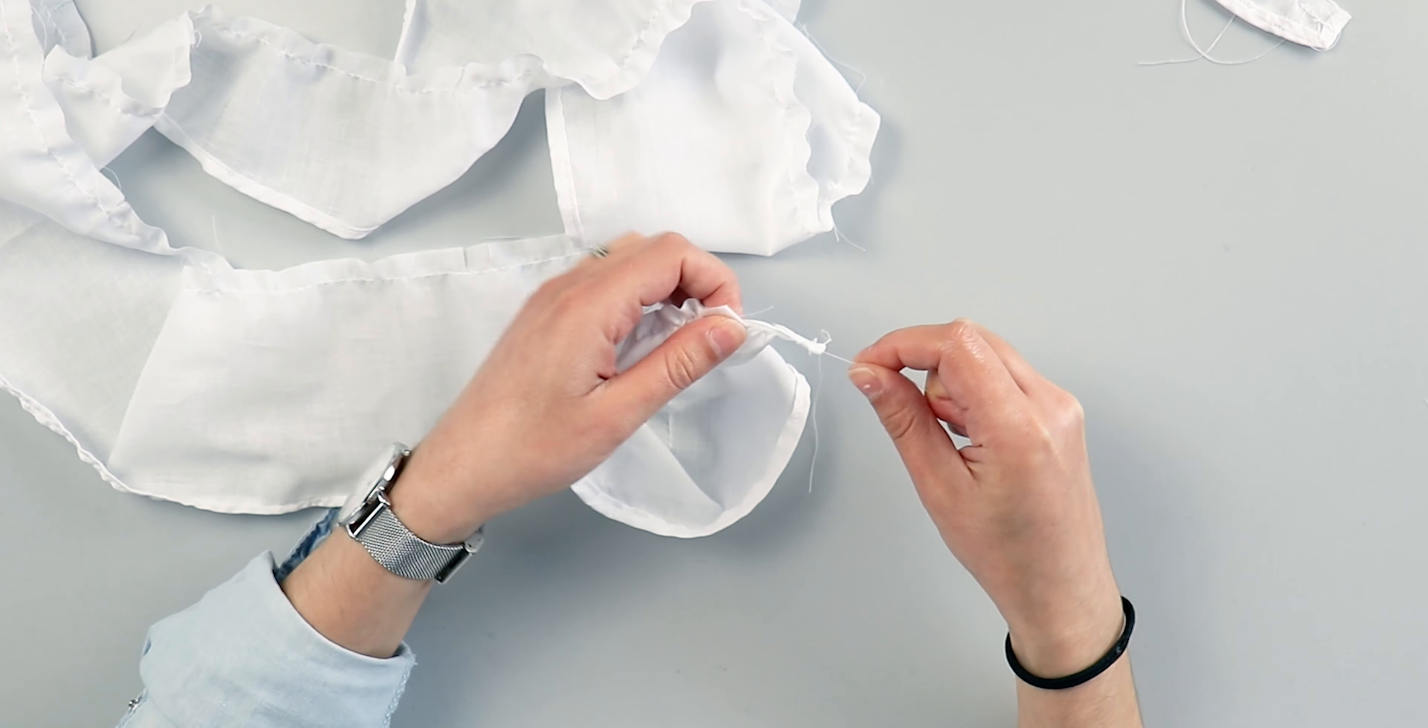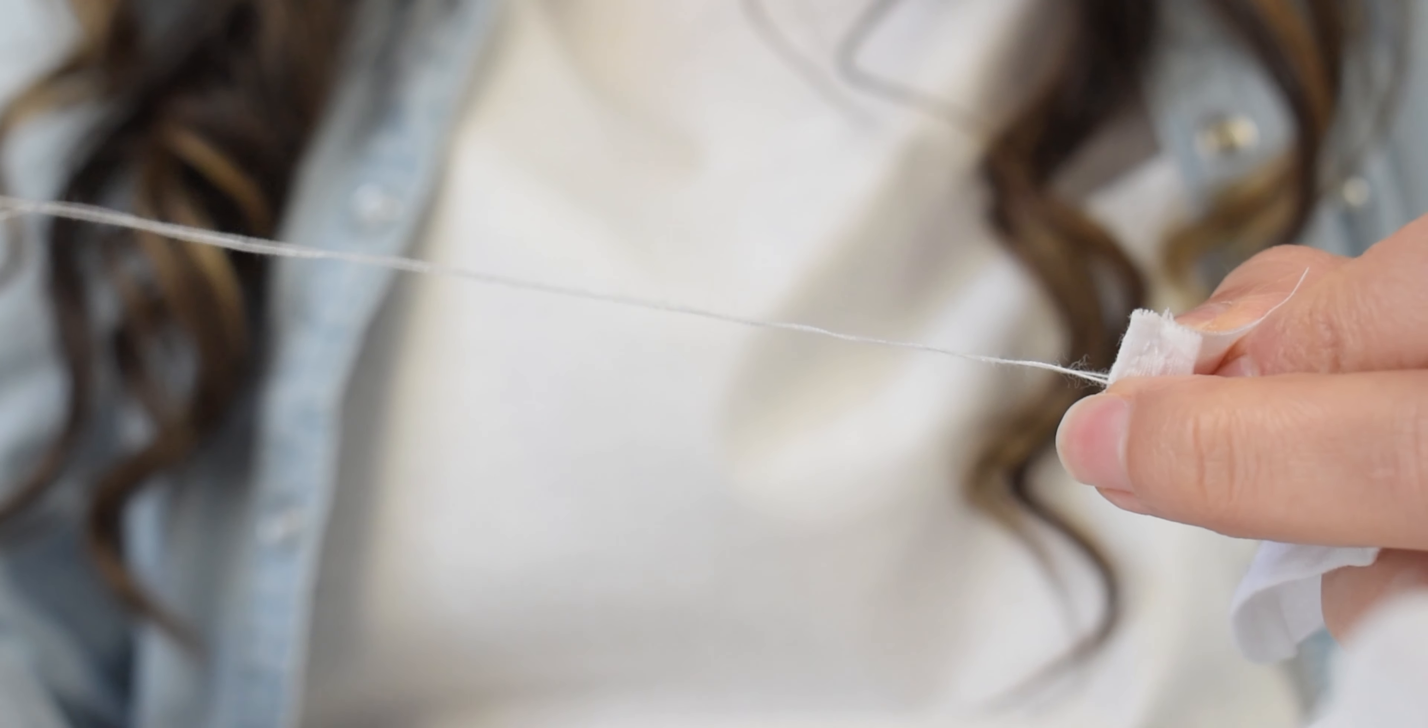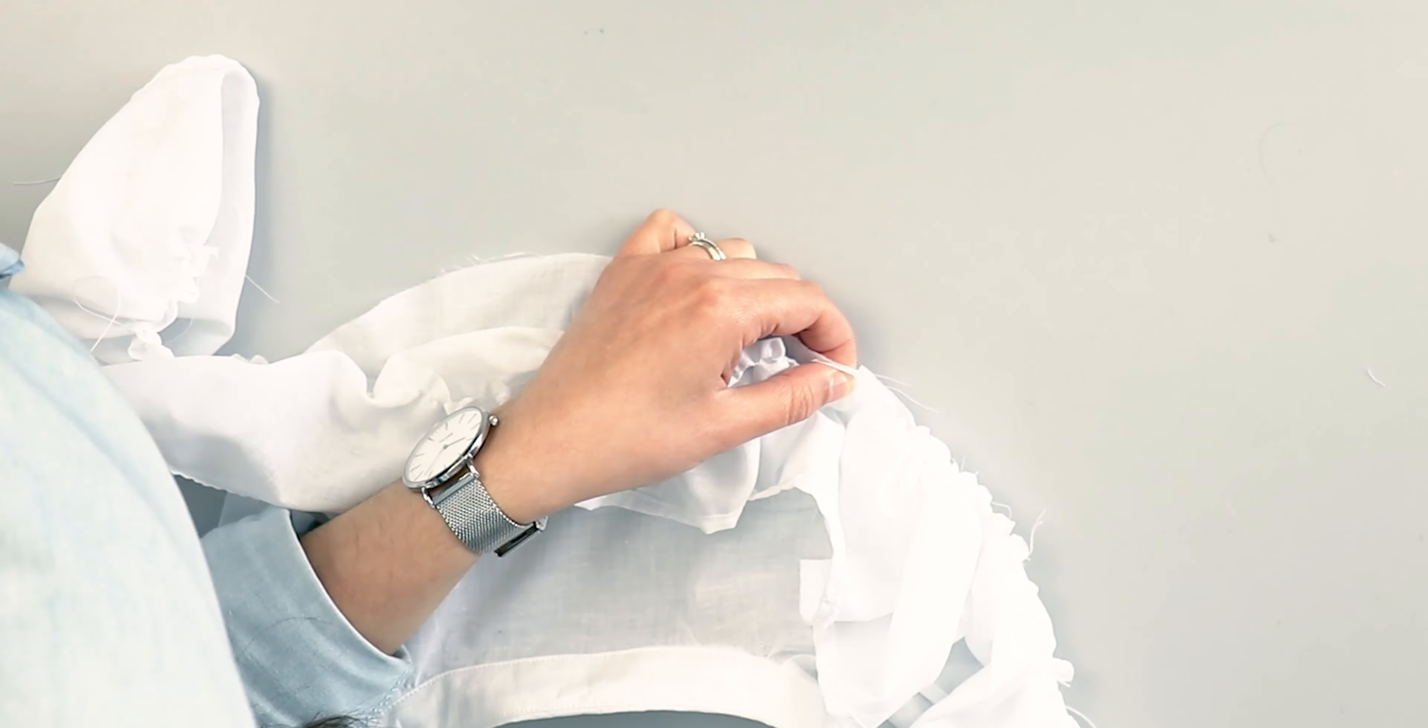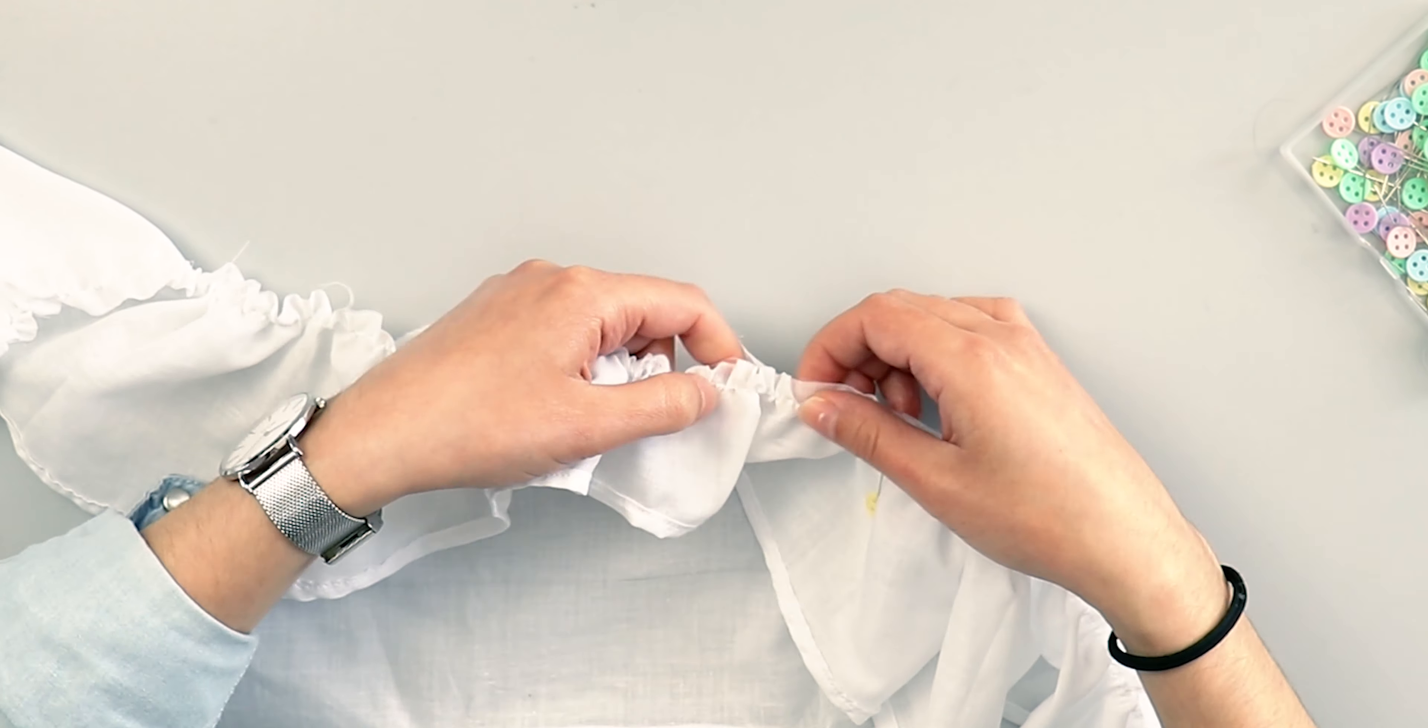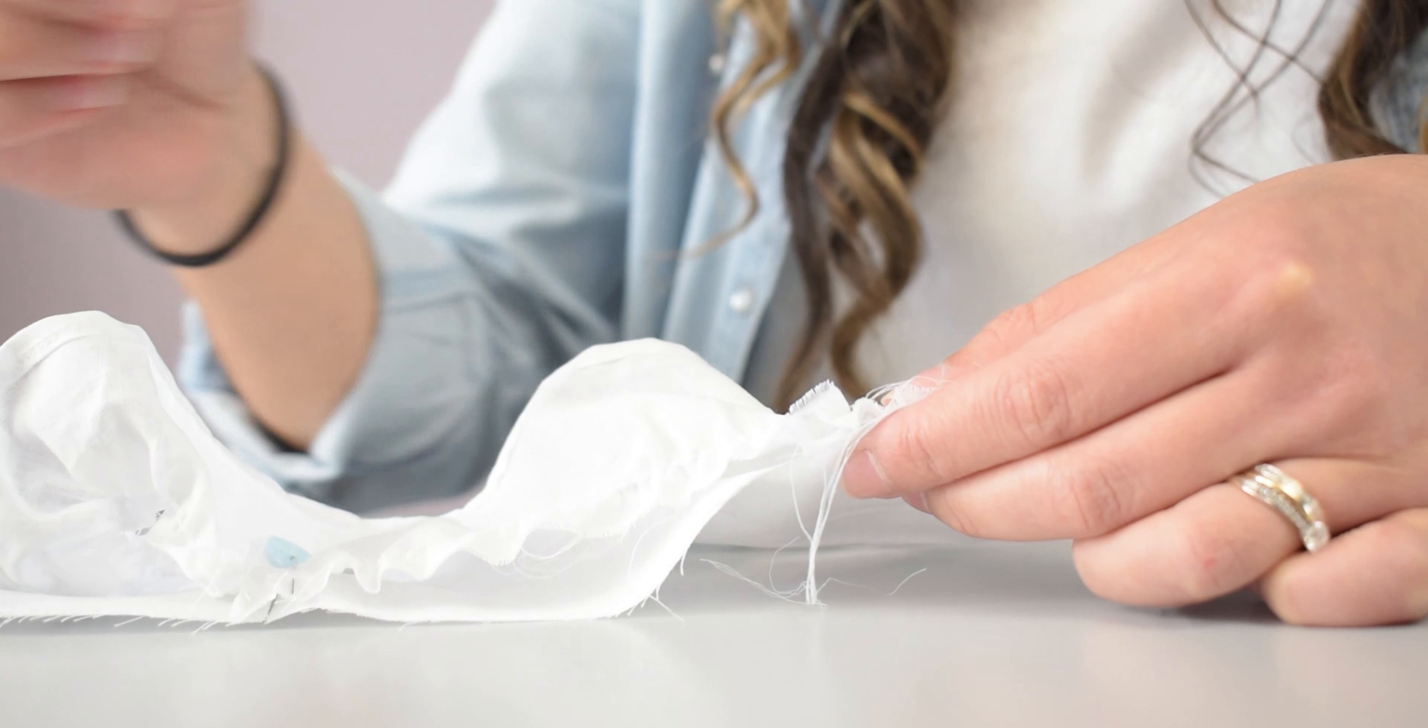Now, we need to gather by carefully tugging the ends of the threads to ruffle the fabric. Make sure the notches on the flounce match the notches on the front panel and ensure that the gathers are distributed evenly. The flounce has to be placed wrong side up and once you are happy,